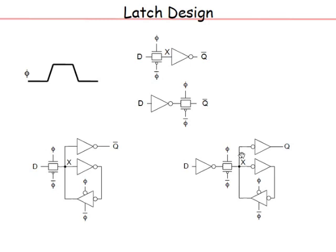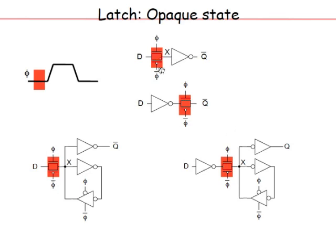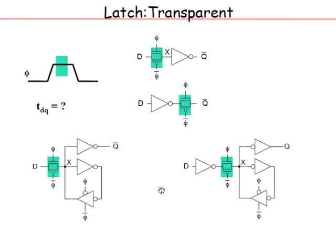In the opaque state the transmission gate is off, so information stays at node x either statically or dynamically. In the transparent state when phi is high, any changes in D are reflected in x, with propagation delay through the transmission gate. The static latch will have much higher propagation delay than the dynamic one because any change in D must propagate through an inverter, through the transmission gate, and drive much larger capacitance. So the Tdq will be much smaller for the dynamic latch, but it is dynamic.